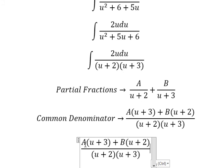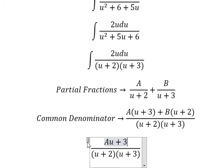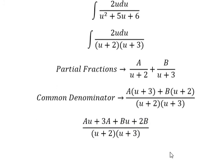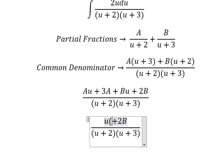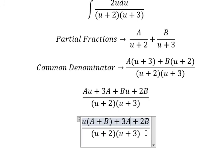So A multiplied with u and number 3, B multiplied with u and number 2. Now we need to arrange based on the term of u. So we have capital A multiplied with u, we will call it u multiplied with u. And we have 3A in here.